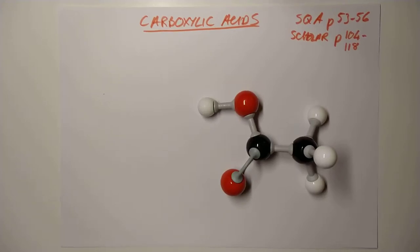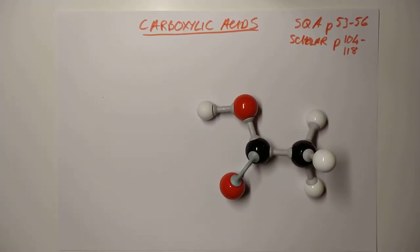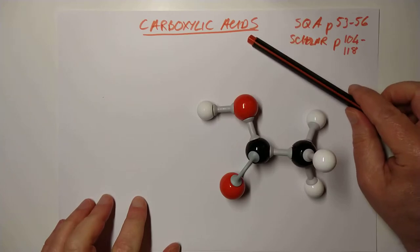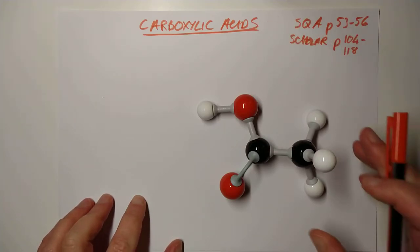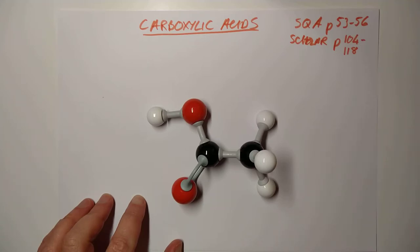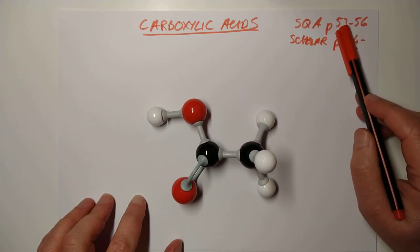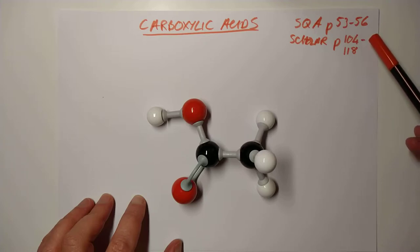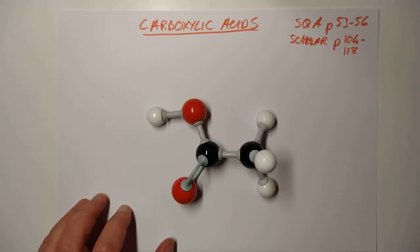Good afternoon folks, welcome back. This is our second last part of National 5 Chemistry. I'd like to introduce you to a brand new homologous series called the Carboxylic Acids. This is SQA pages bottom of 53 through to 56, and Scholar 104 through to 118.